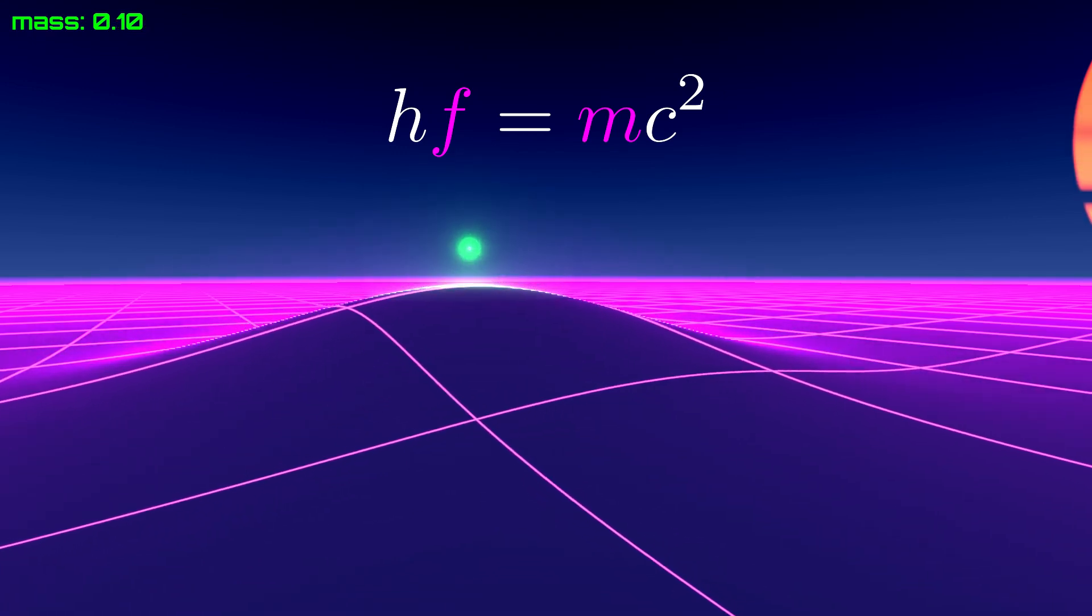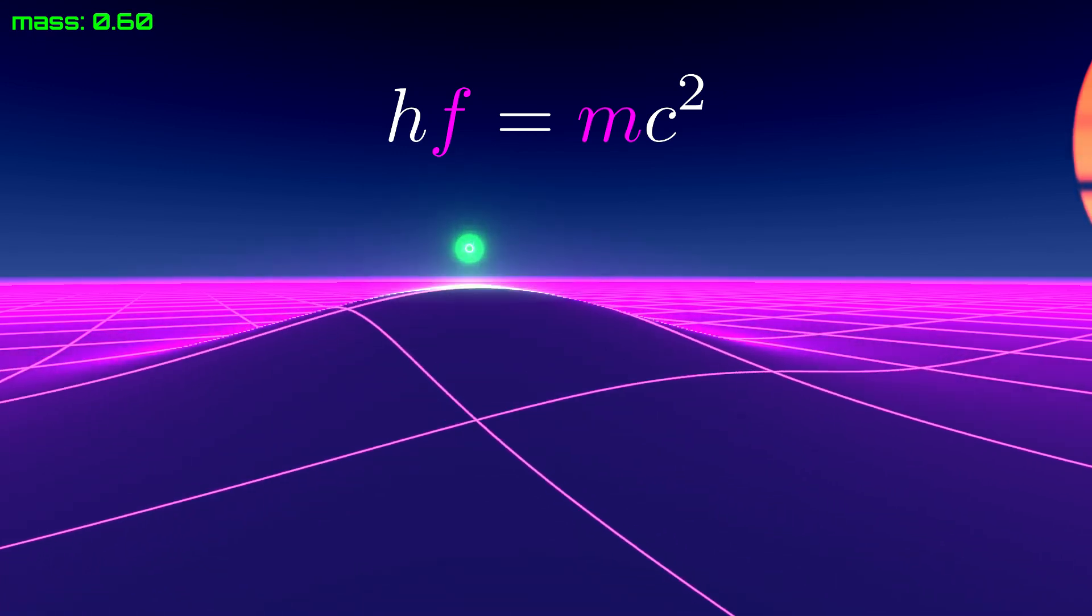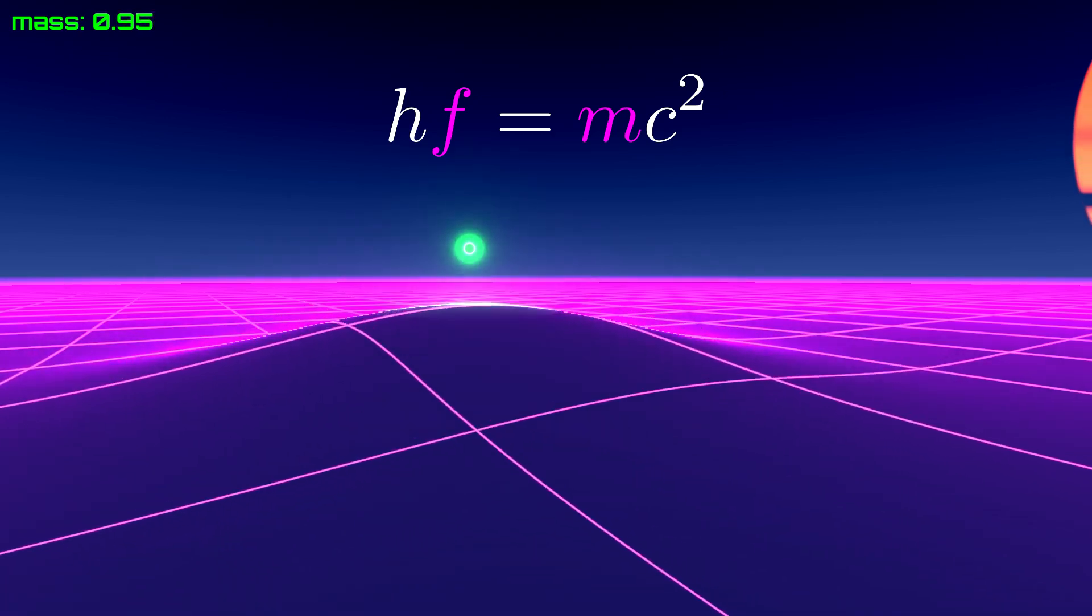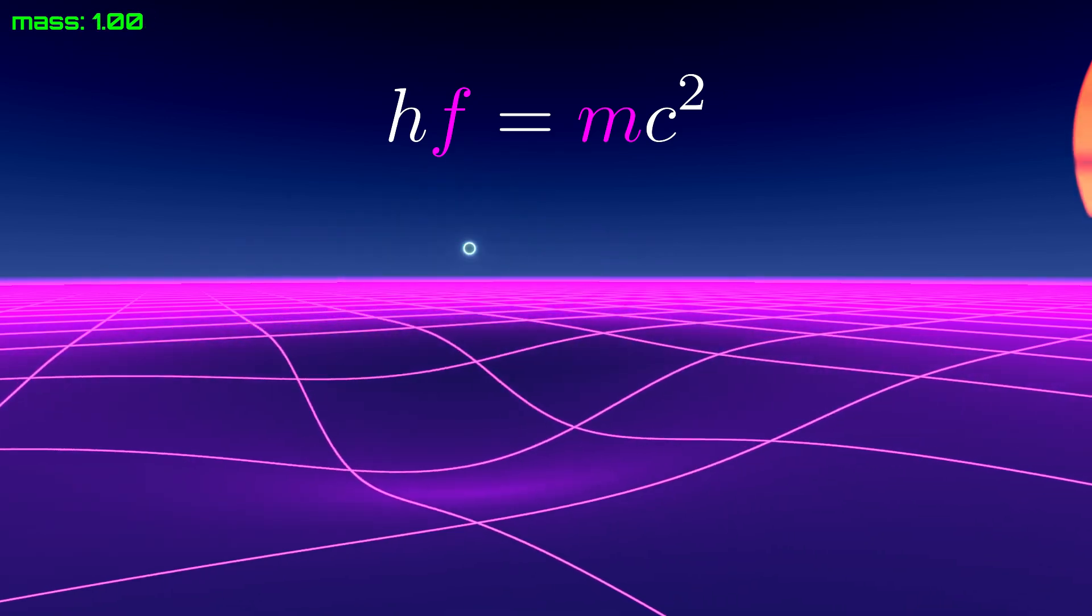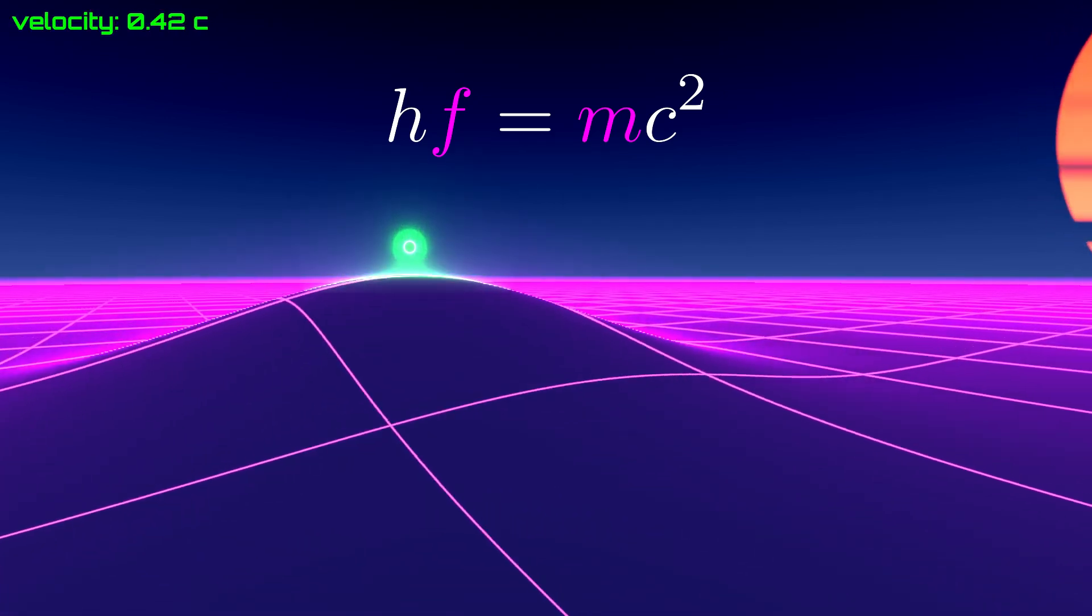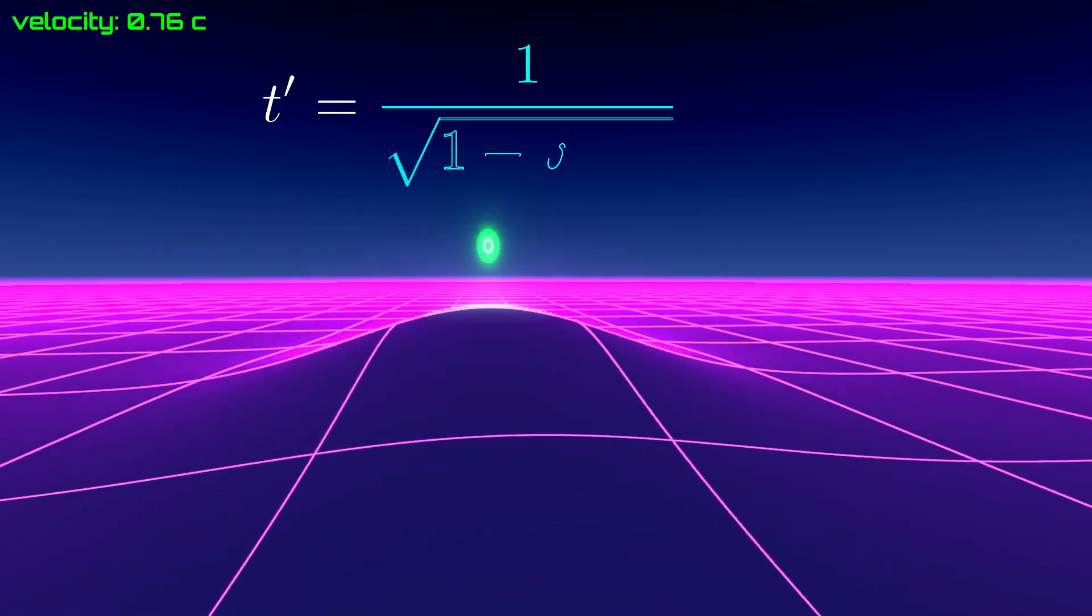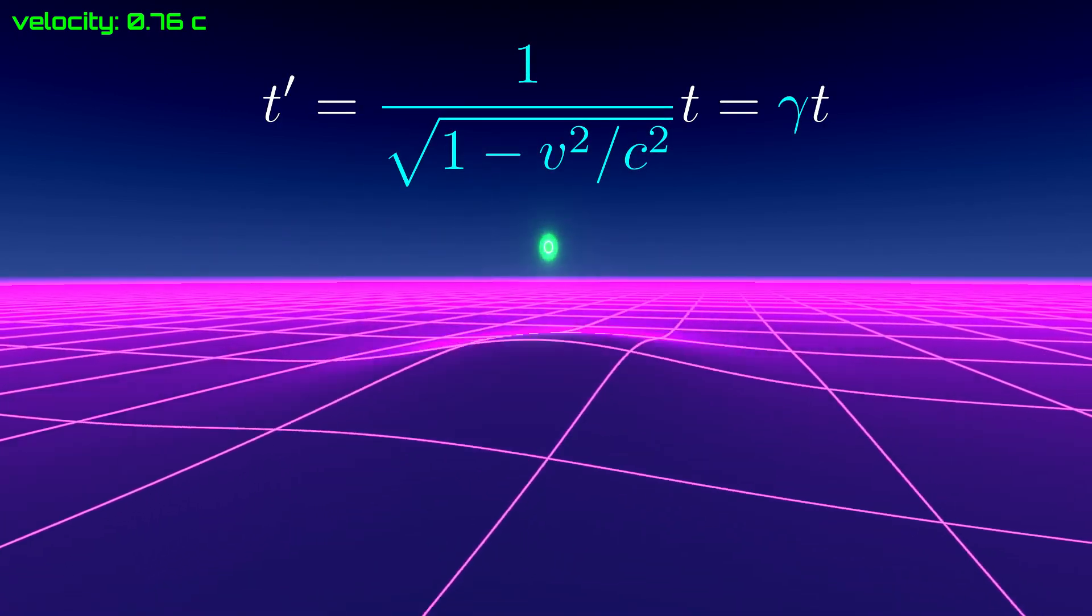But what if the particle gets moving? Here we encounter a problem. For what happens to a clock that is moving? It slows down, right? You know it, because of relativistic time dilation.